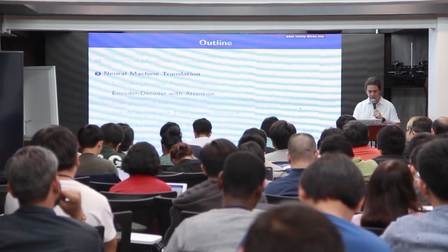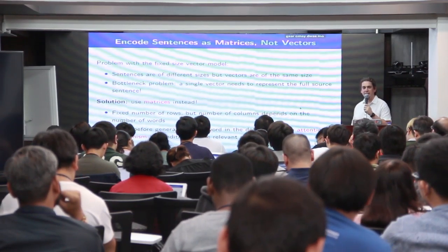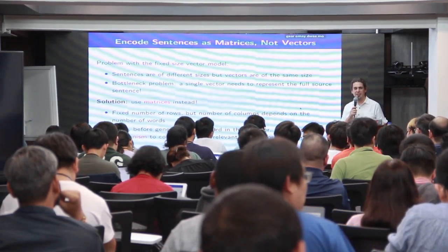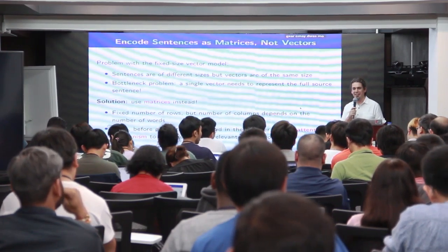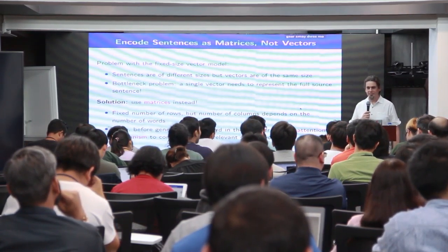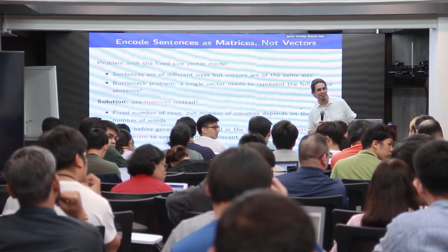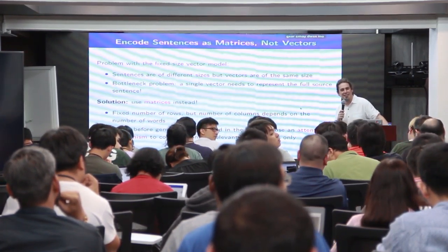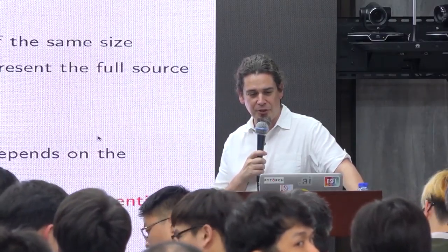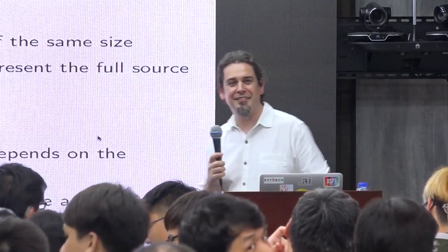How can LSTMs cope when translations and their sources are far apart? This leads us to the encoder-decoder model with attention. The main trick is to encode sentences as matrices instead of vectors — one vector per source word — allowing the decoder to dynamically focus on the most relevant parts of the source.